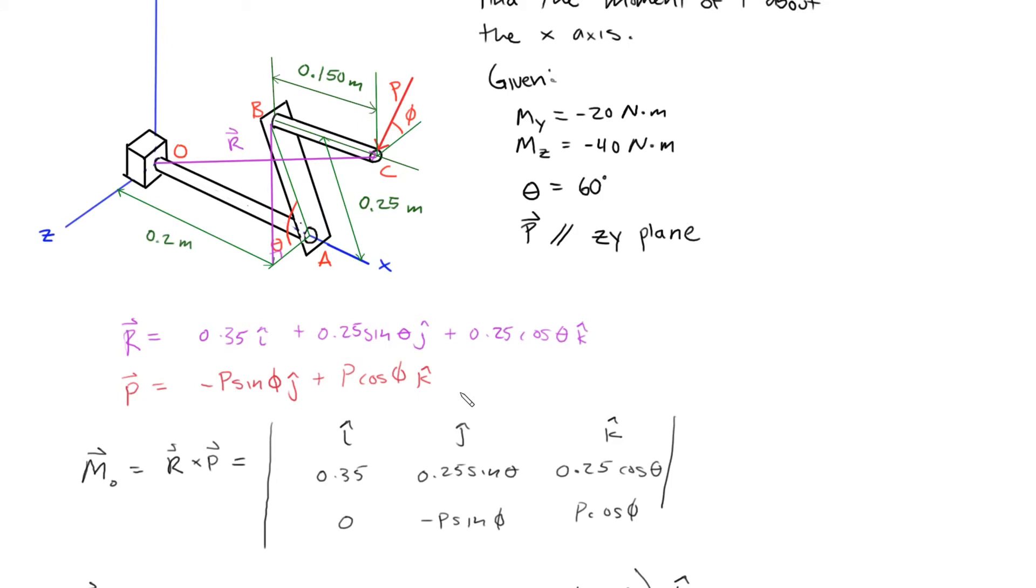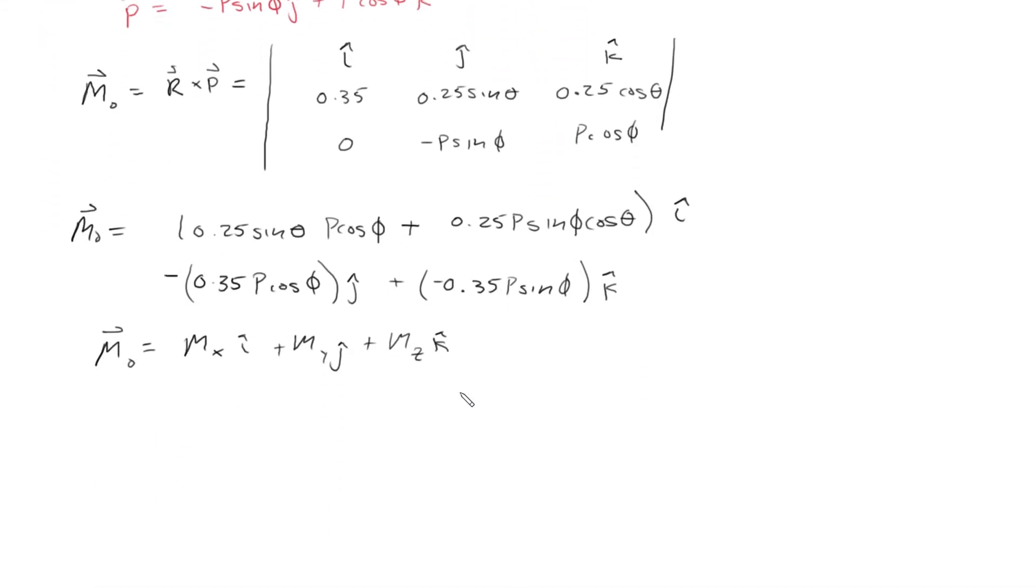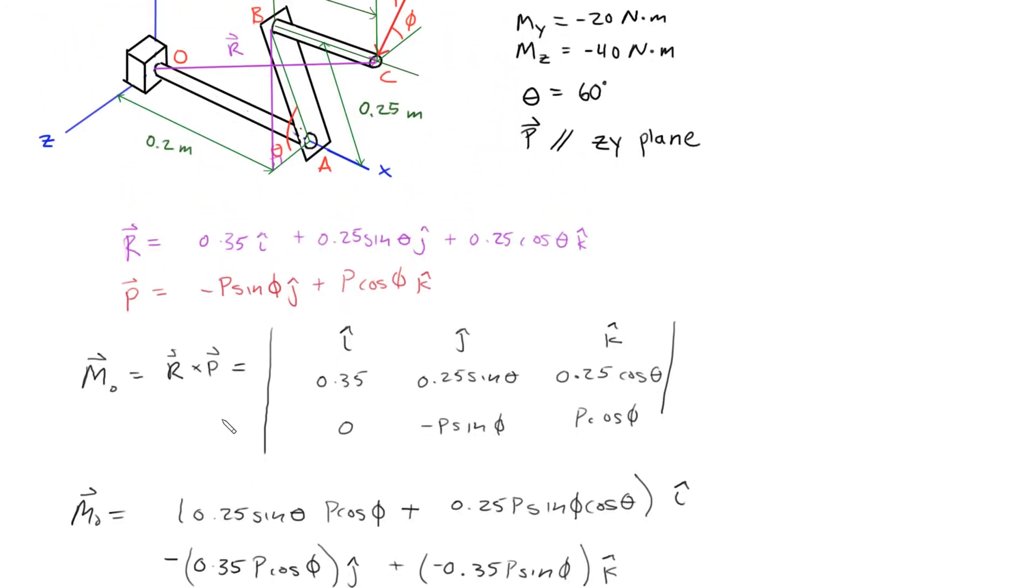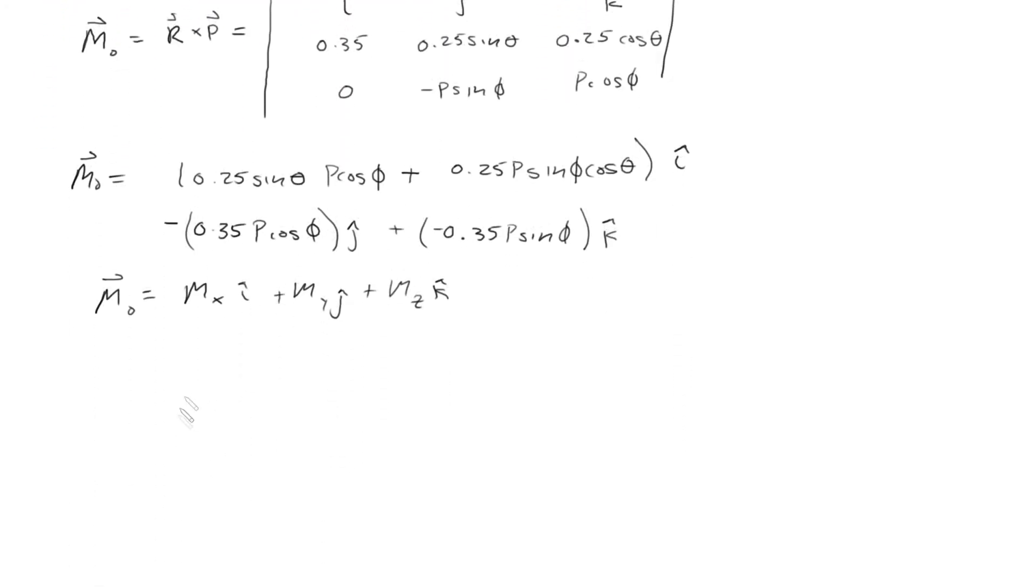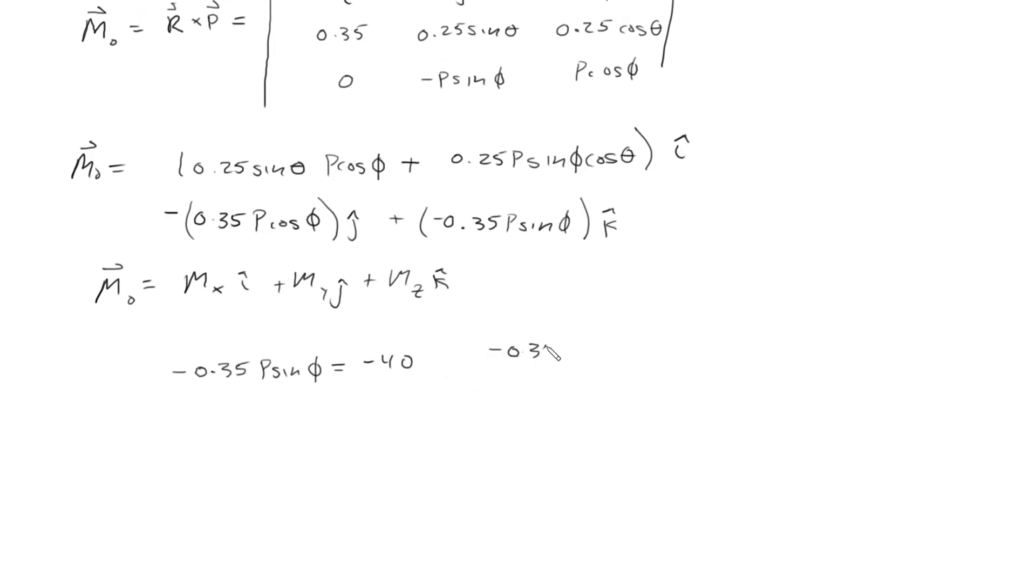We're given that my equals negative 20, and mz equals negative 40. So we can write that negative 0.35 P sine phi equals negative 40.